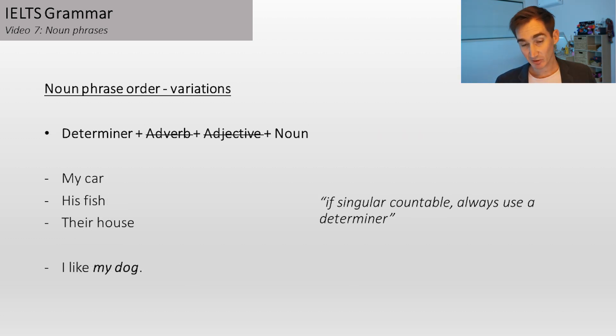Now sometimes you'll add a determiner to your noun and that's all they'll be. This has to be the case if your noun is singular. If singular countable, always use a determiner. And you might even use determiners for other situations as well. So for example, my car, his fish, their house.